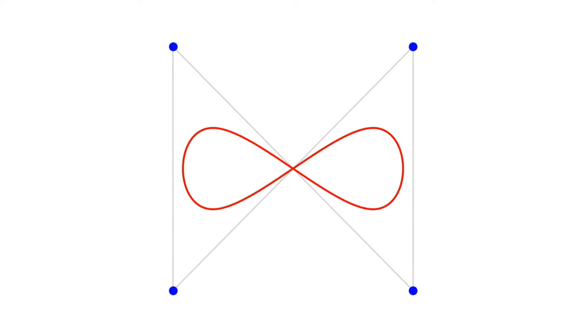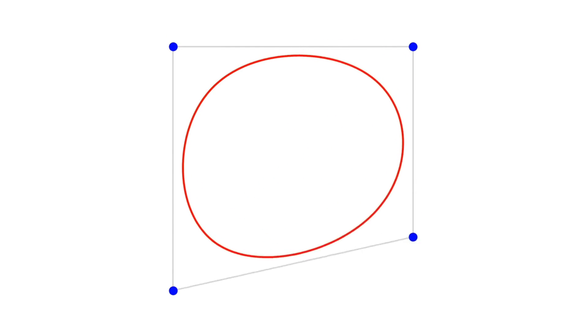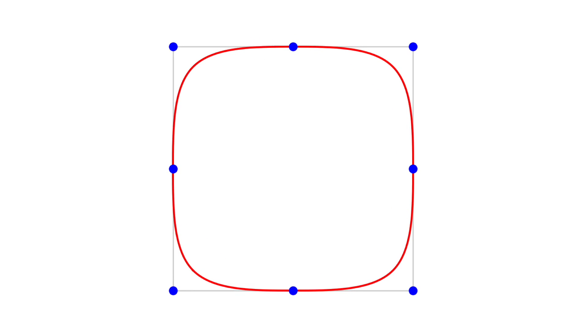We can treat our original four corners as control points. And if you move them around, you can get other nice subdivision curves. And we can make a nice subdivision squircle with eight control points.